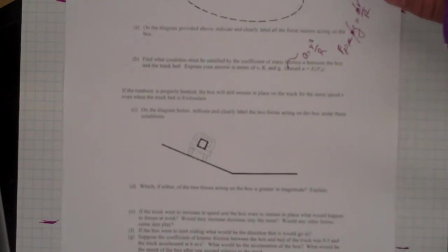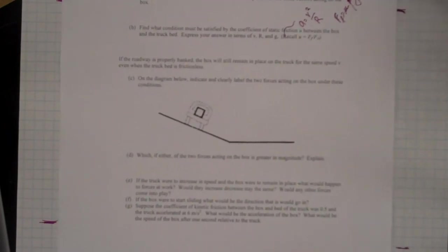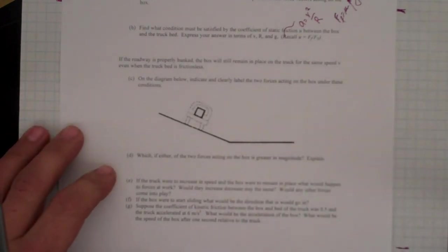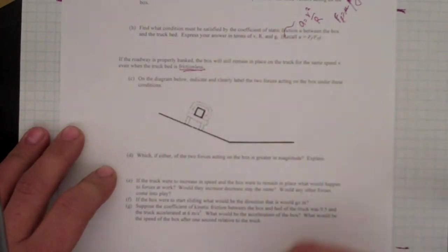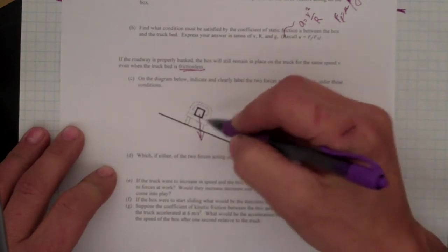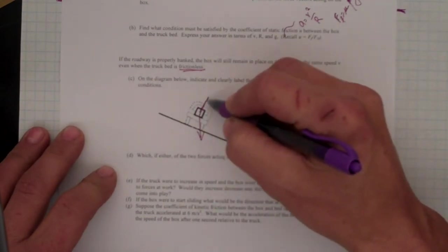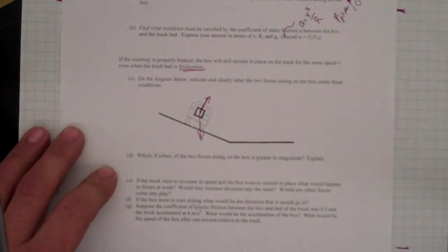The next question asks us now to look at the possibility that the road is properly banked, the box will remain in place with the truck. So the idea here is that the forces that are acting on the box, again, there's only really two forces because it's frictionless. So I have an Mg force down, and then I have a normal force that is perpendicular to the roadway.